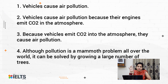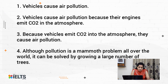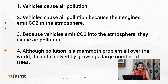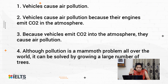Here is a simple sentence: 'Vehicles cause air pollution.' Now the complex version: 'Vehicles cause air pollution because their engines emit carbon dioxide into the atmosphere.' The word 'because' connects the two clauses. You can also reverse it: 'Because vehicles emit carbon dioxide into the atmosphere, they cause air pollution.' The comma is mandatory when the linker comes at the start.